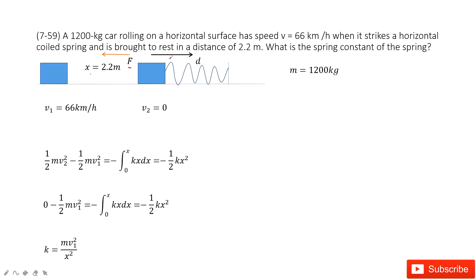In this case, these two are in opposite directions, so we keep the negative sign there—it's cosine 180 degrees. After we do this integral, it becomes negative one-half kx squared.